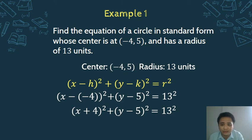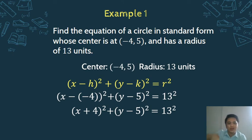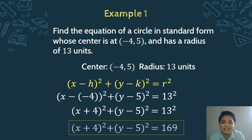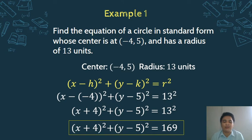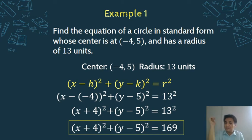Since the answer required is standard form, we just compute the right side: 13 times 13 equals 169. So the standard form of the circle with center negative 4 comma 5 and radius 13 is: (x + 4)² + (y − 5)² = 169. That's how easy it is to find the standard form.